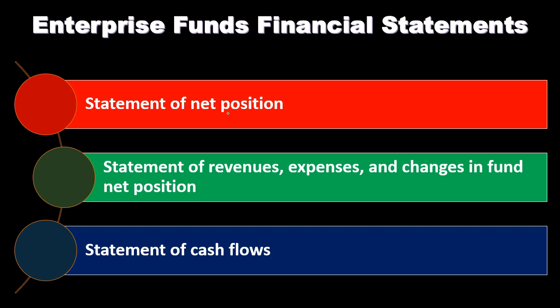The governmental fund uses fund balance as the equity-type section, whereas here we use net position. The statement of revenues, expenses, and changes in fund net position is similar to an income statement in governmental accounting. The use of 'expenses' rather than 'expenditures' — which is used under modified accrual — and 'net position' rather than 'fund balance' both indicate this fund is on an accrual basis. Finally, the statement of cash flows is included because the enterprise fund operates on a more full accrual basis, similar to for-profit accounting.